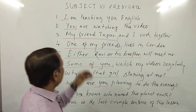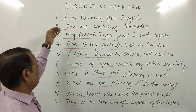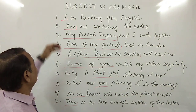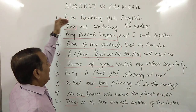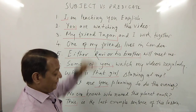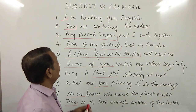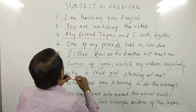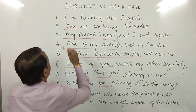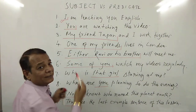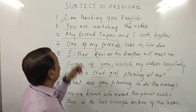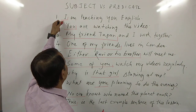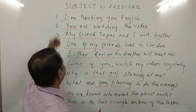For demonstration, I have written down 10 sentences. Sentence one: 'I am teaching you English.' Here, in this sentence, I am talking about myself. So here, 'I' is the subject.